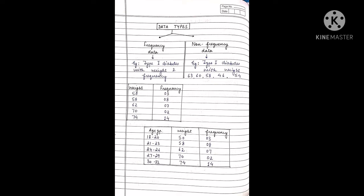But if we consider frequency data, the variable weight is shown with how many patients have that weight. This is more specific data. As shown in this table, 50 kg weight is found in 3 patients, meaning its frequency is 3. For 58 it's 8, 62 is 7, 70 is 22, and for 74 it's 14. So it's a more specific form of data but slightly more complex.